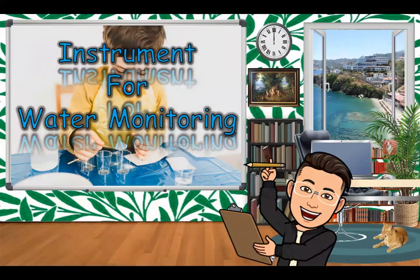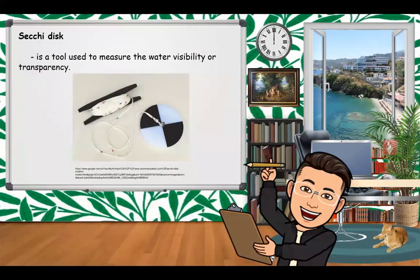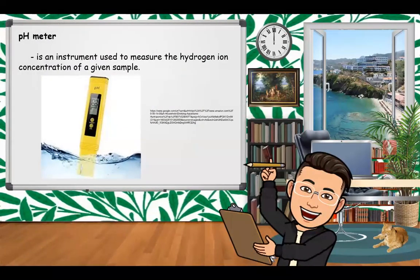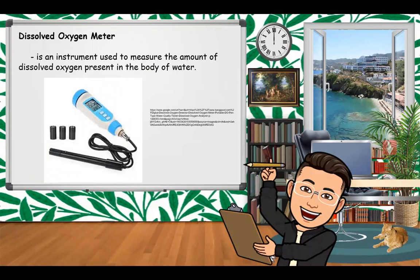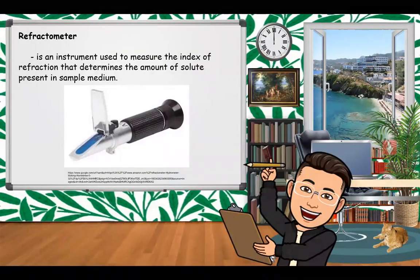Instruments for water monitoring are used to test pH, alkalinity, and acidity of water. The Secchi disk is a tool used to measure water visibility or transparency. The pH meter is an instrument used to measure the hydrogen ion concentration of a given sample. The dissolved oxygen meter is an instrument used to measure the amount of dissolved oxygen present in a body of water. The refractometer is an instrument used to measure the index of refraction, which determines the amount of solute present in a sample medium.